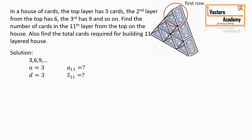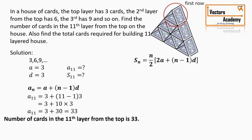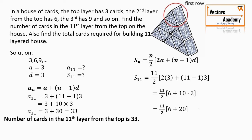Using the formula AN = A + (N − 1) × D, we substitute A = 3, N = 11, and D = 3, and we get A11 = 33 — so 33 cards are required in the 11th row. To find the total number of cards, we use the sum formula: S11 = 11/2 × [2 × 3 + (11 − 1) × 3]. Solving this gives us a total of 143 cards required to build a house of 11 layers.